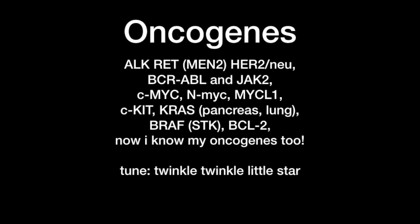BCL2 causes follicular lymphoma, or B-cell dyscrasias, because BCL2 is an important anti-apoptotic mechanism preventing B-cell overproliferation. So if BCL2 is mutated into an oncogene, it becomes a cause for B-cell dyscrasias. That covers all of the oncogenes, their gene products, and the associated neoplasms.